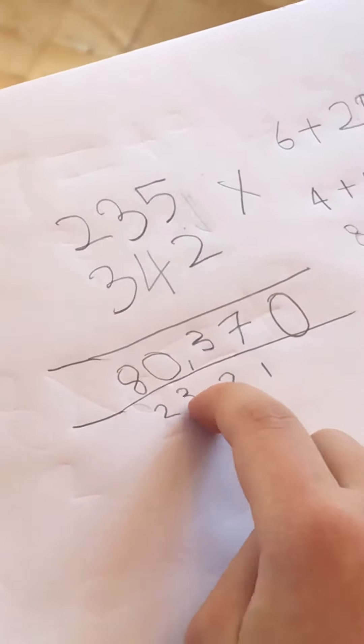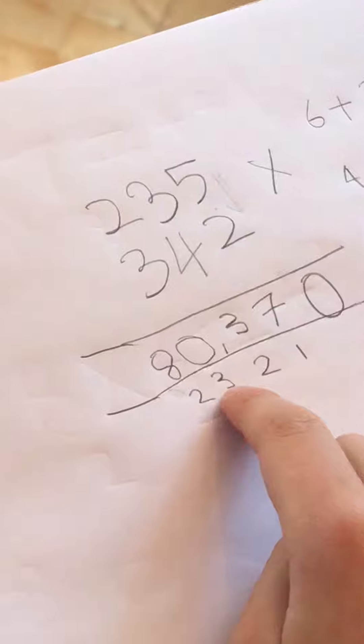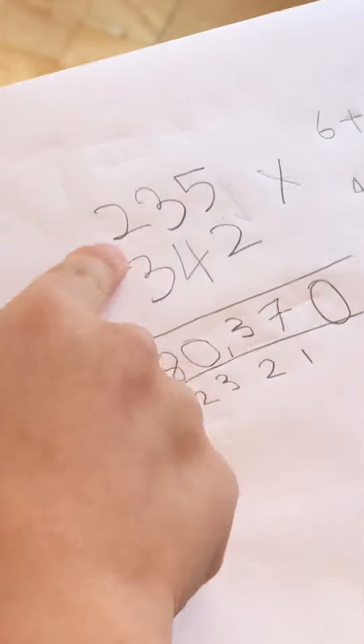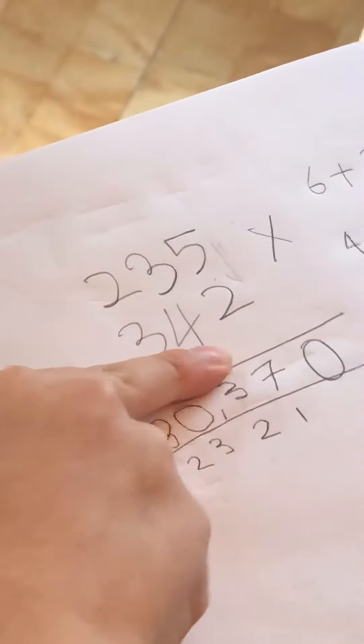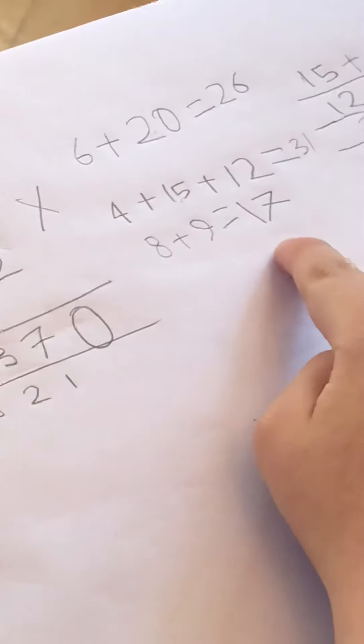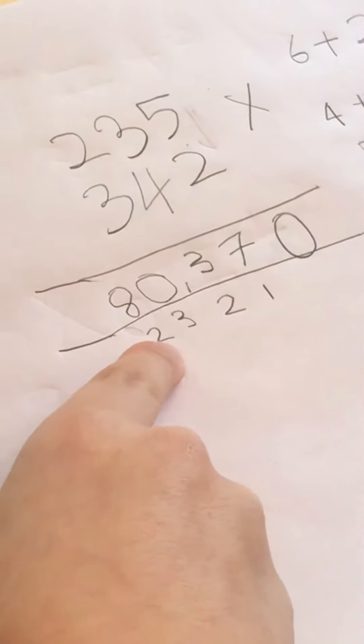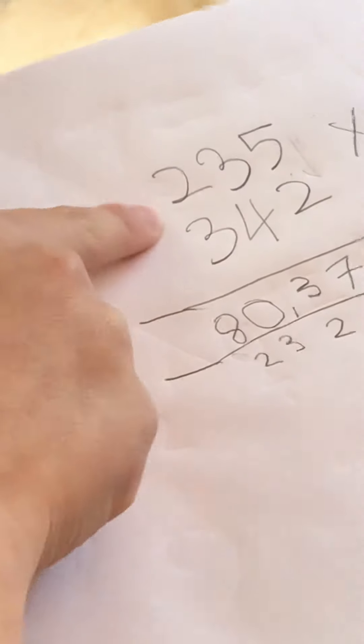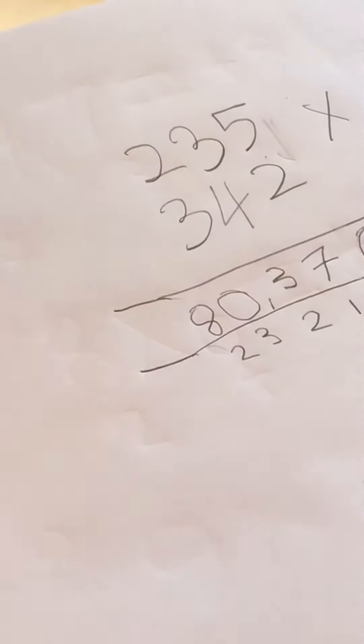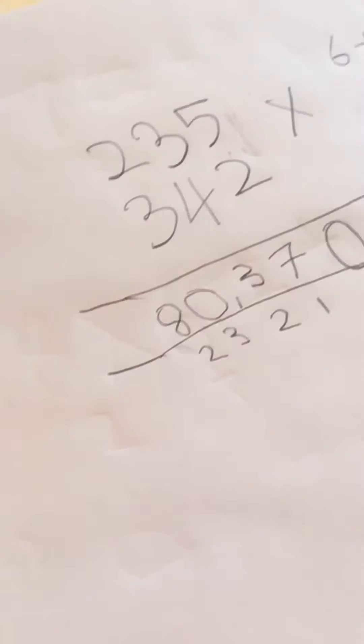And then we go crosswise again, 2 times 4, which is 8, 3 times 3, which is 9, that makes 17. Because there's 3 here, we make it 20, and 2 times 3 is 6, and because of the 2, it gives us 8.